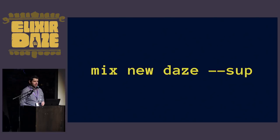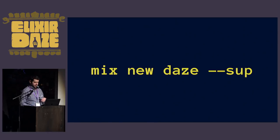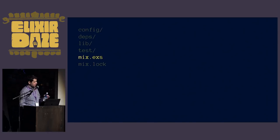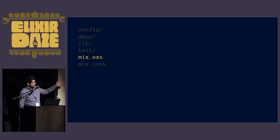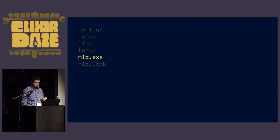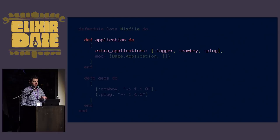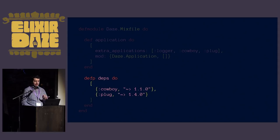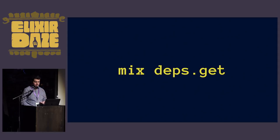We're going to start a new application called Days, since we're at Elixir Days, and we'll pass the supervisor flag so it creates that for us. We go to our mix file - this is how I denote which file we're working on in the directory. Let's add our dependencies: we're going to add Cowboy and Plug in our mix file.